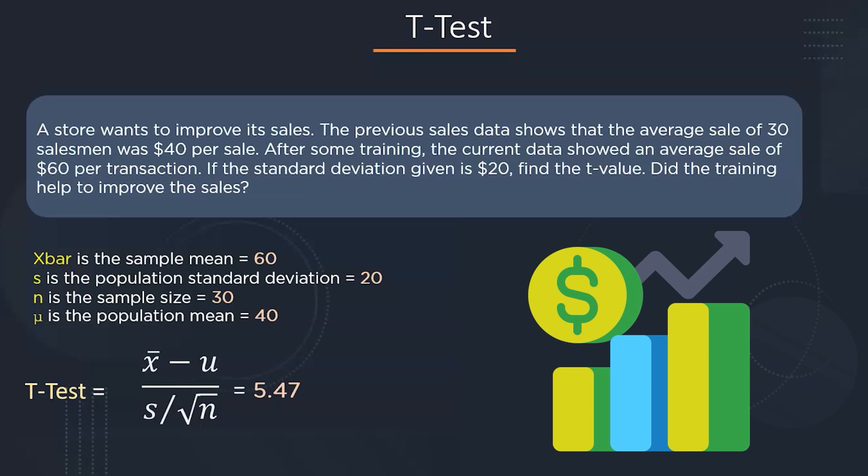In this case also, we assume the significance value to be 0.05. Moving from right to left in a T-table, the critical value comes out to be 1.711, which is less than 5.47. So, in this case also, we can reject the null hypothesis and conclude that the training did affect the sales — the training was helpful.